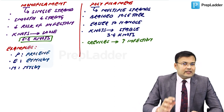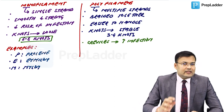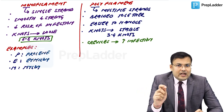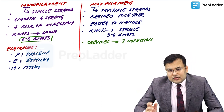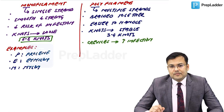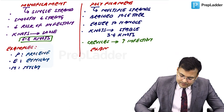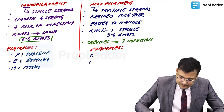An important exam question: if there is evidence of infection or surgical site infection risk, which suture is preferred? It is the monofilament suture. Examples of polyfilament sutures can be remembered with the mnemonic SLIP — silk, linen, and polyglycolic acid (also known as dexin).